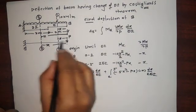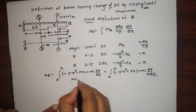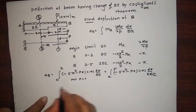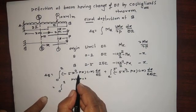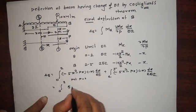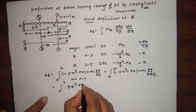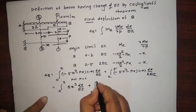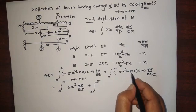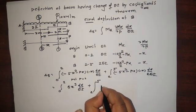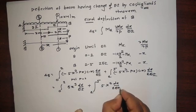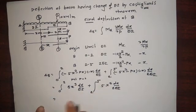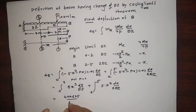Now, P is our fictitious force, so we set P equal to 0 as per the procedure. The equation becomes: integration from 0 to 2 of 5x³ dx divided by EI, plus integration from 2 to 5 of 5x³ dx divided by 2EI. Solving these two integrations gives 400.625 divided by EI.